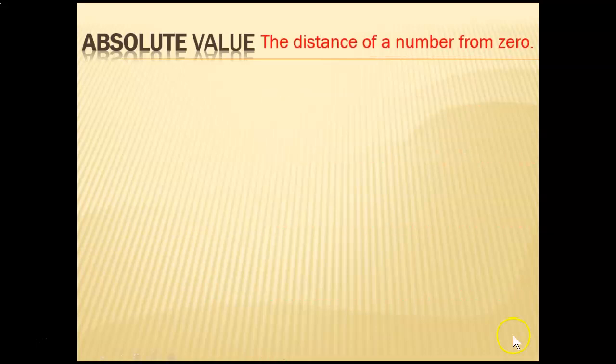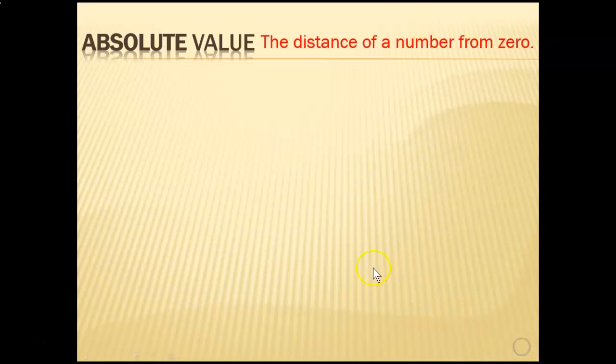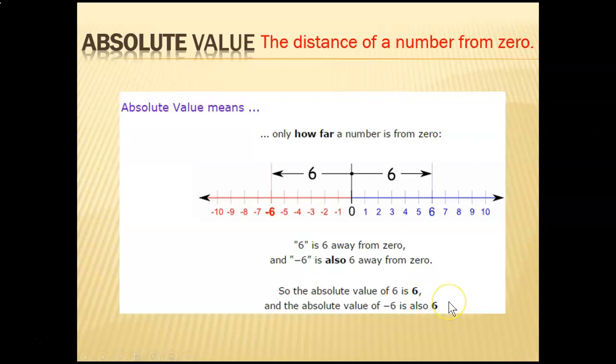Next: absolute value. Does anybody remember what absolute value is? Then you might want to write this word down and its definition. Absolute value is the distance of a number from zero. To review: absolute value is how far a number is from zero.